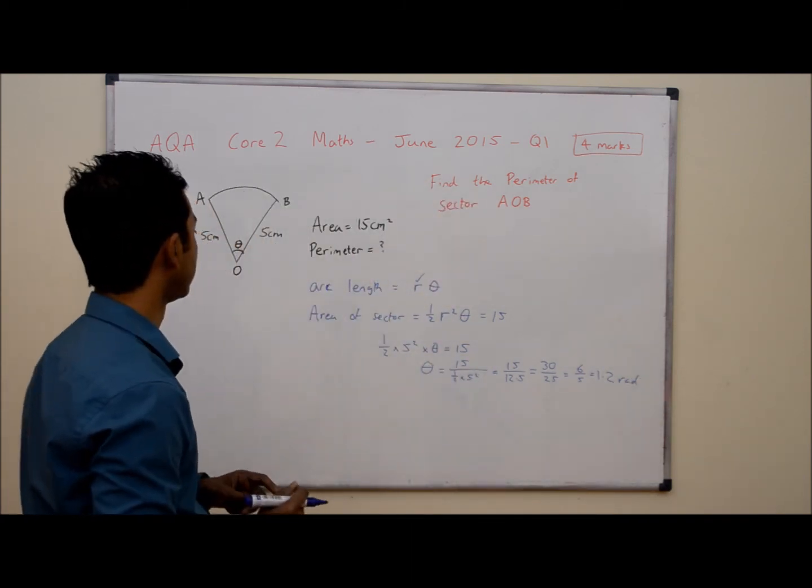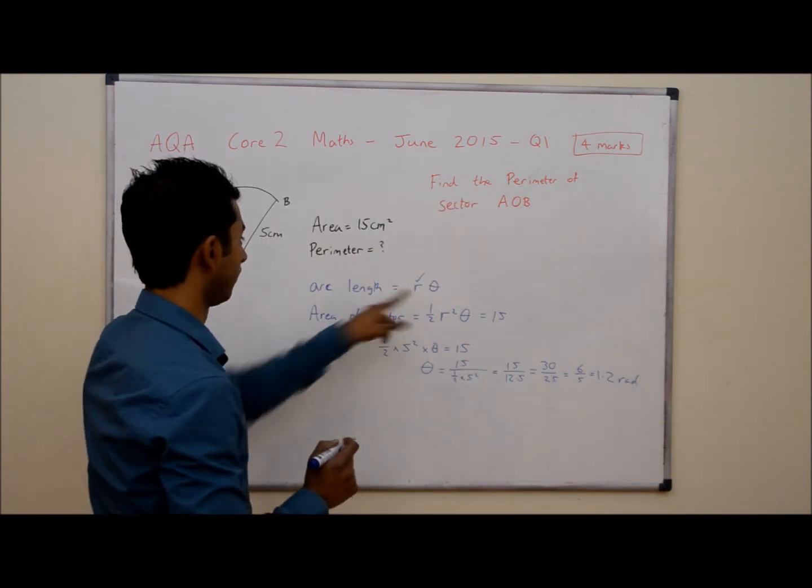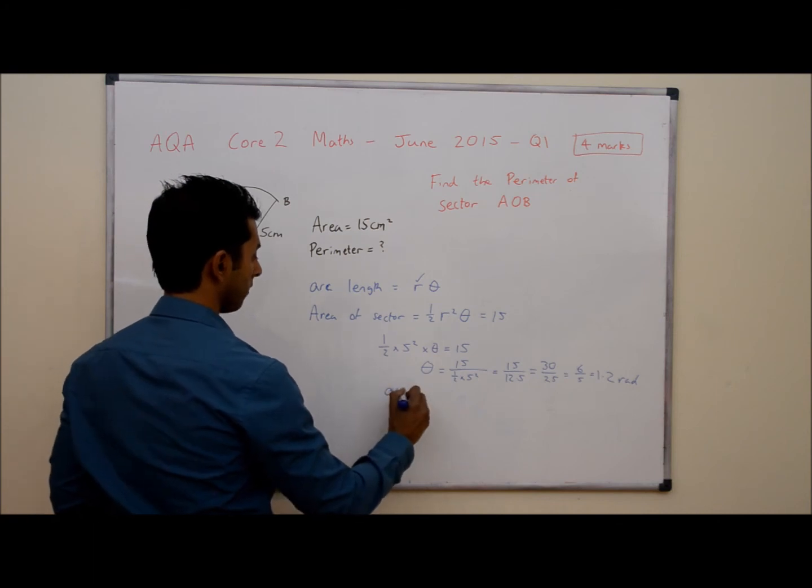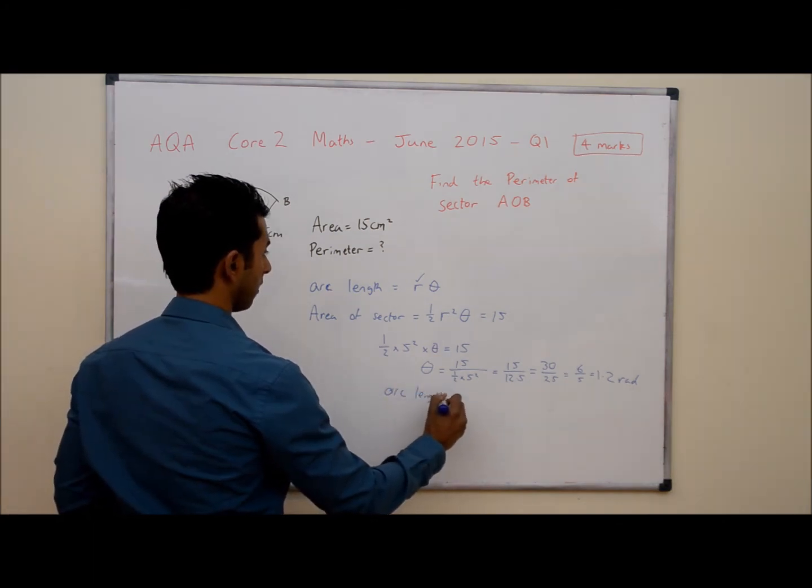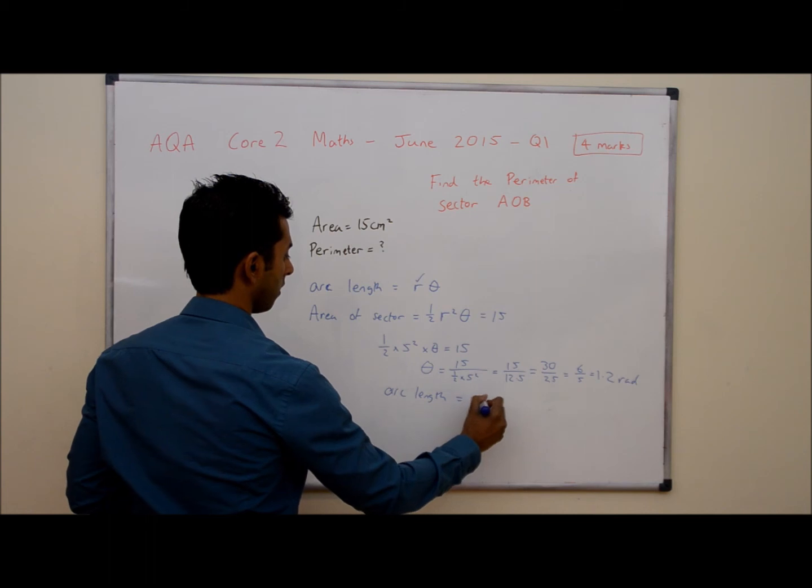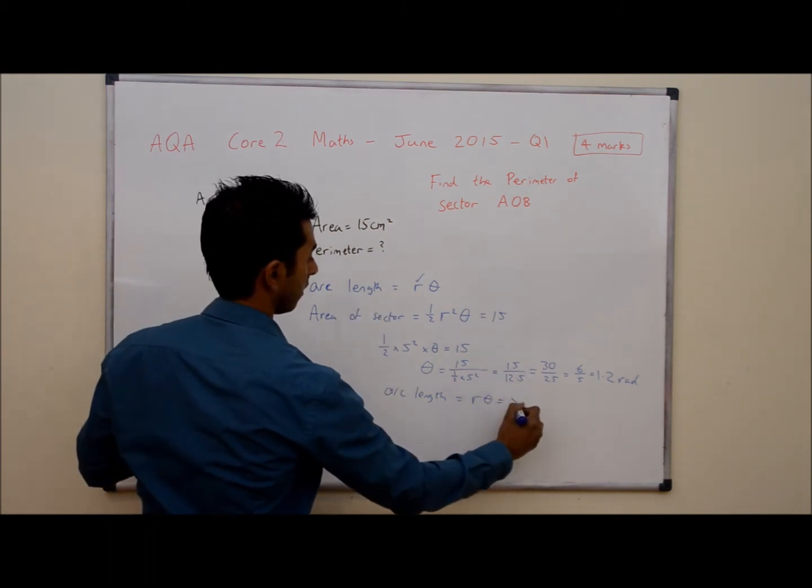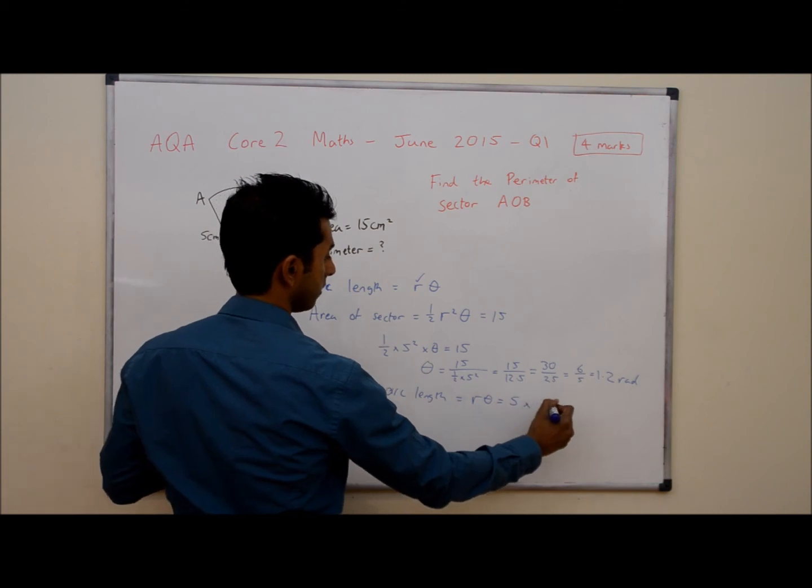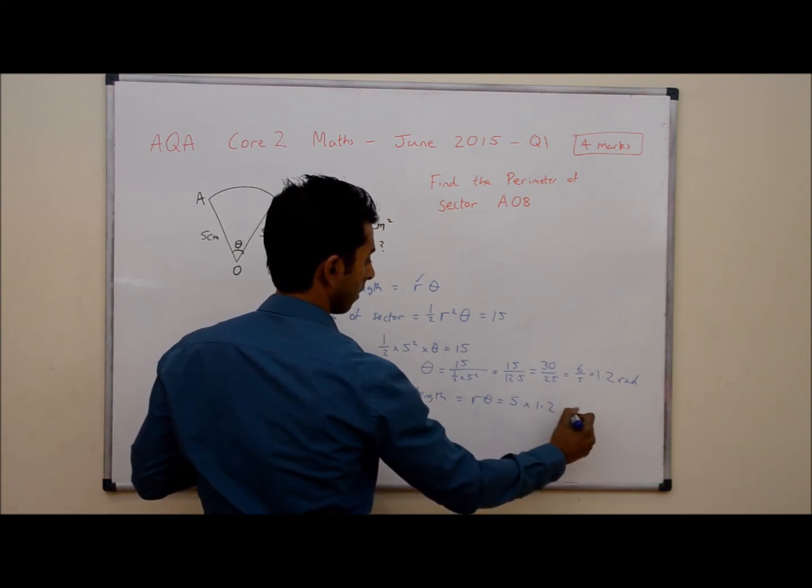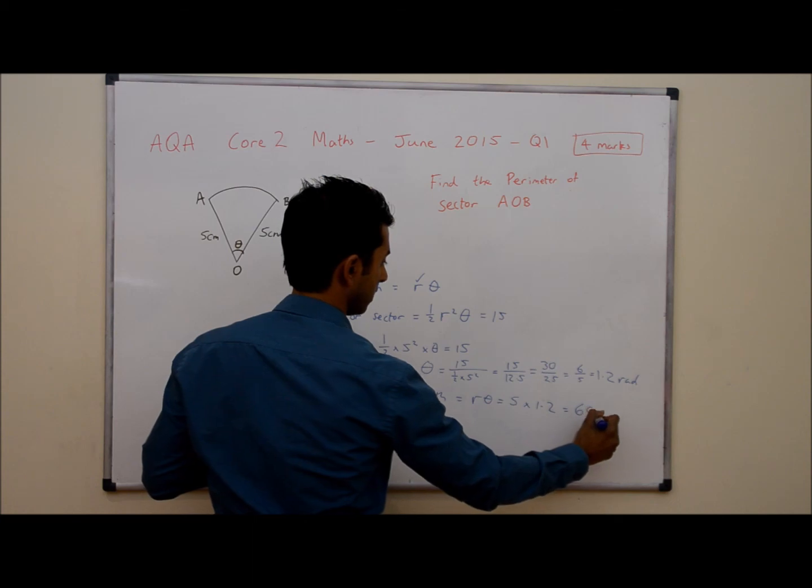Now in order to find the arc length we're going to use this formula. So arc length is equal to R theta. So that's R which is 5 multiplied by theta which is 1.2, and that gives you 6 centimeters.